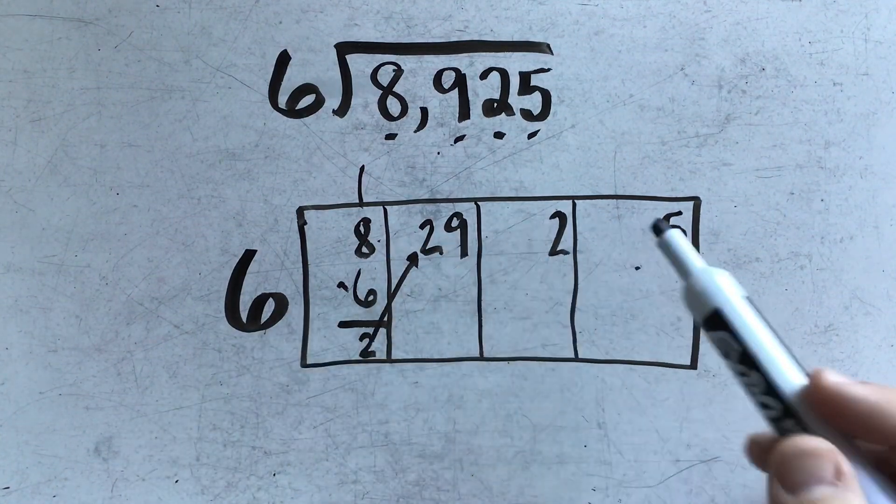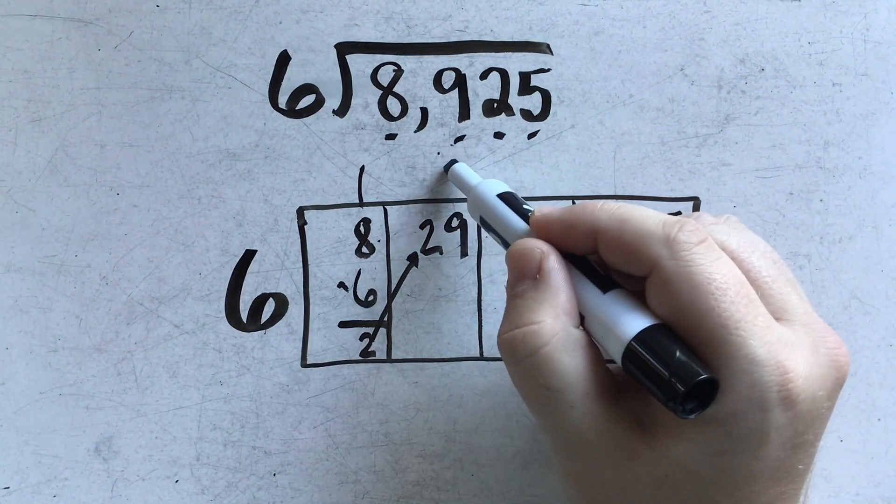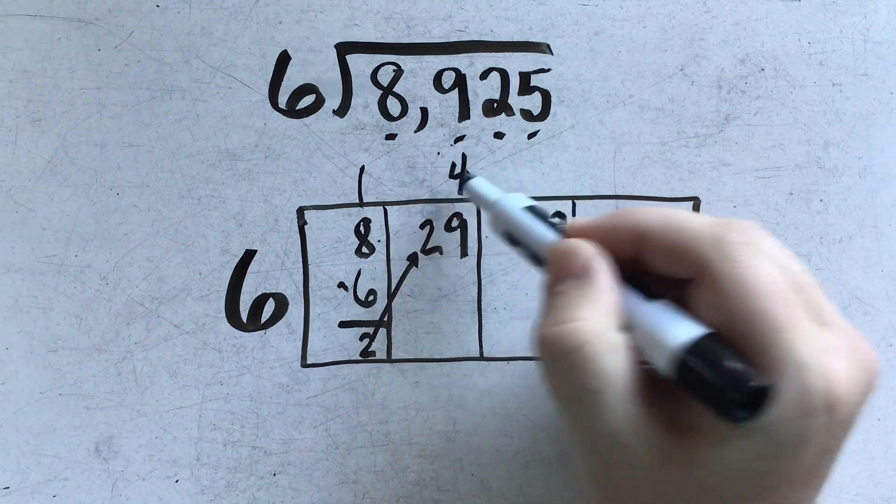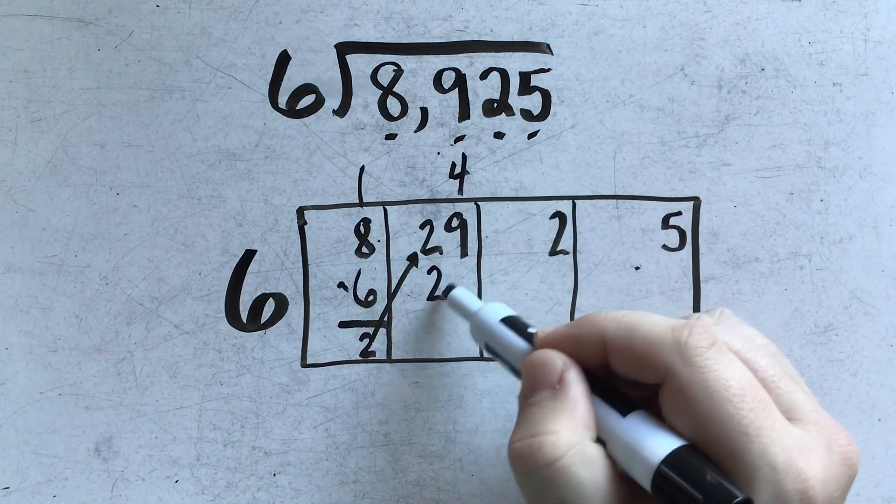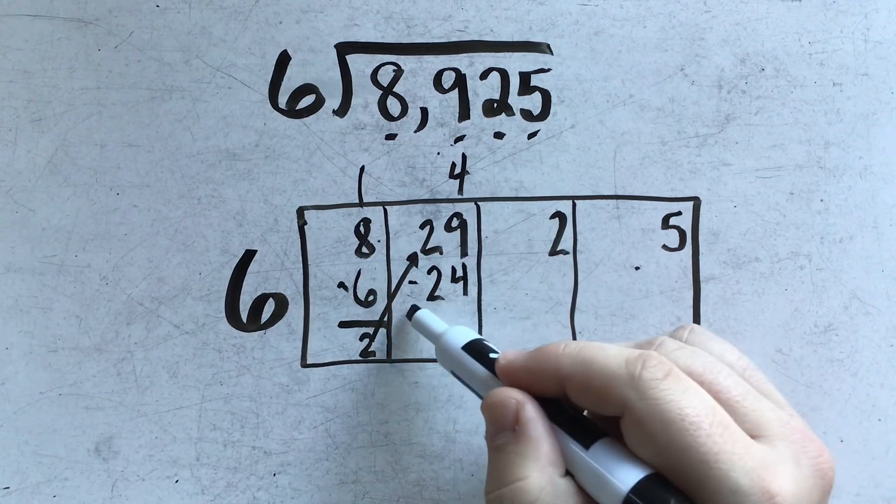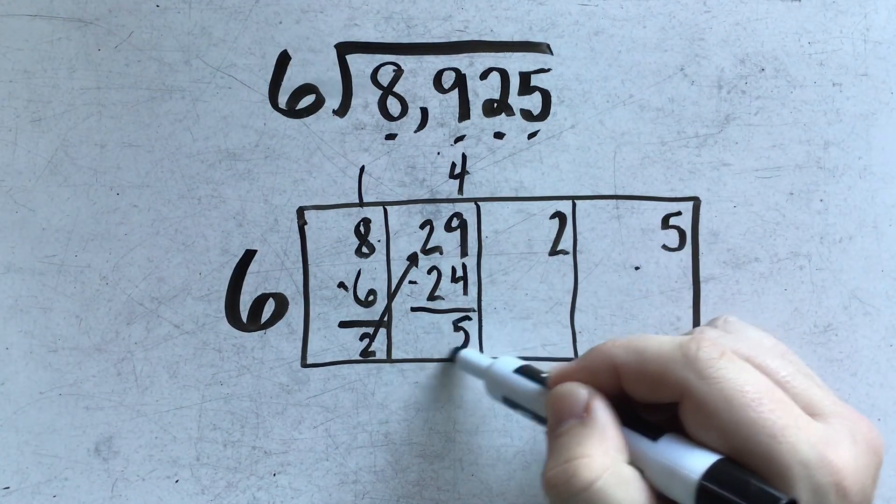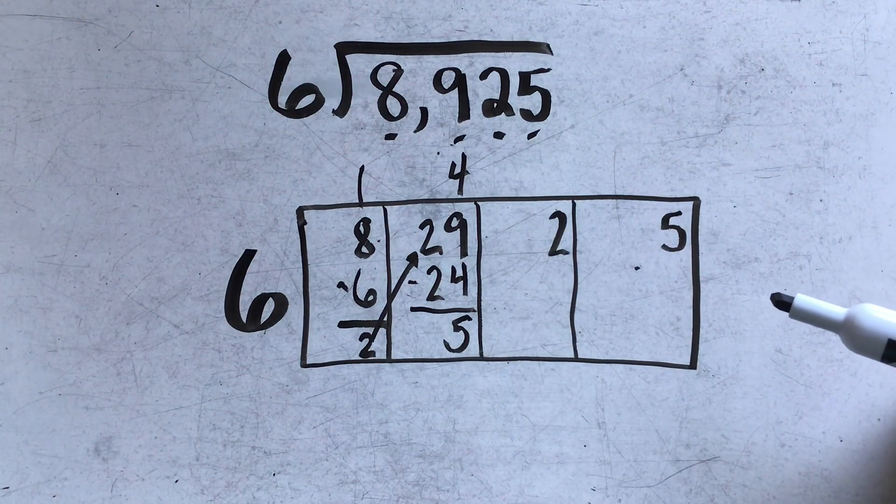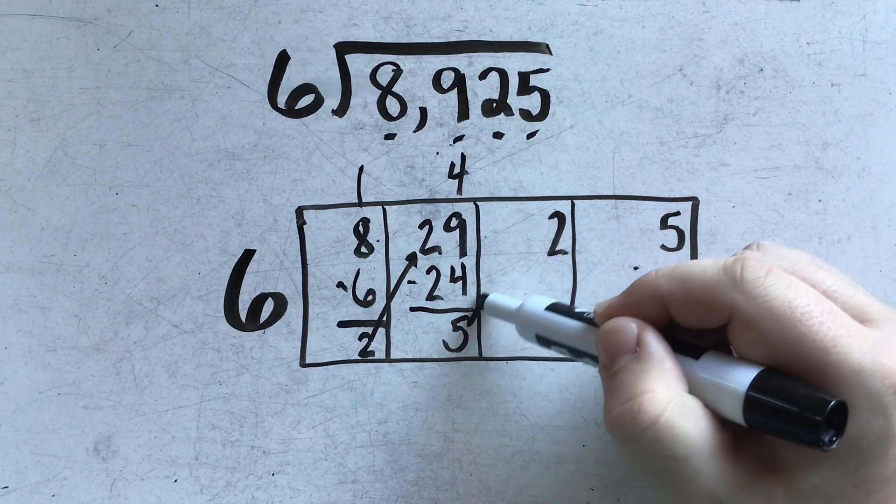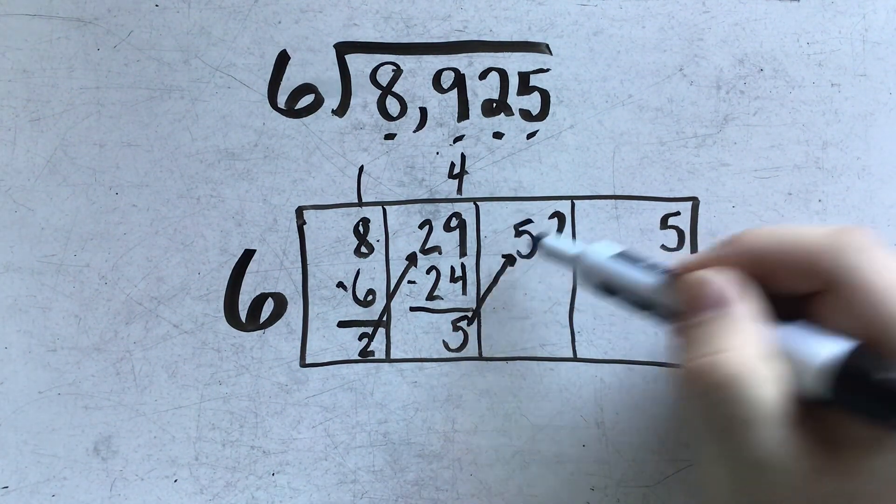And now I can continue in my division problem. 6 goes into 29, 4 times. 6 times 4 is 24. And when I subtract, I have 5 left over. Continuing on, I'm going to take that 5 and again move it right next door.